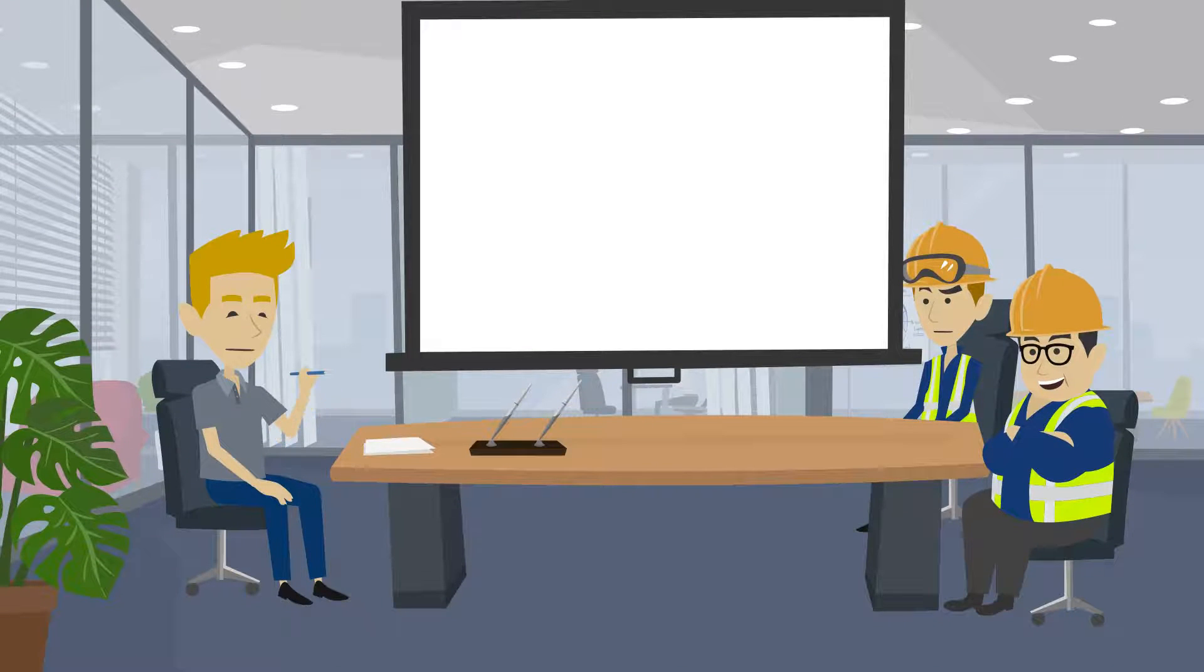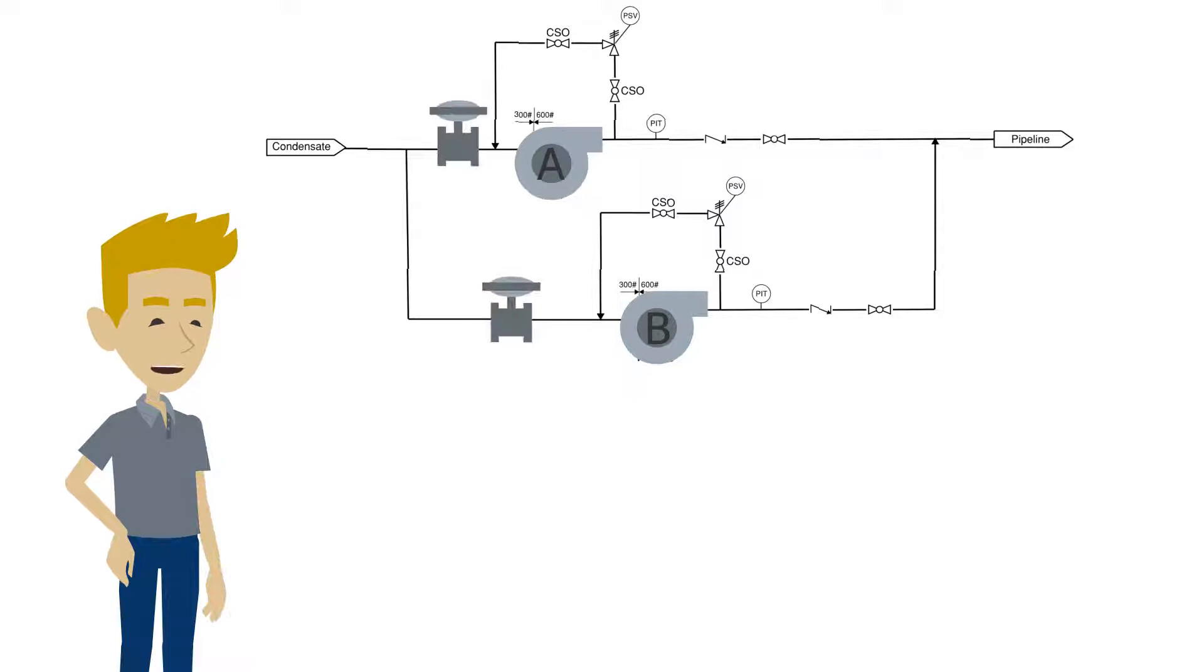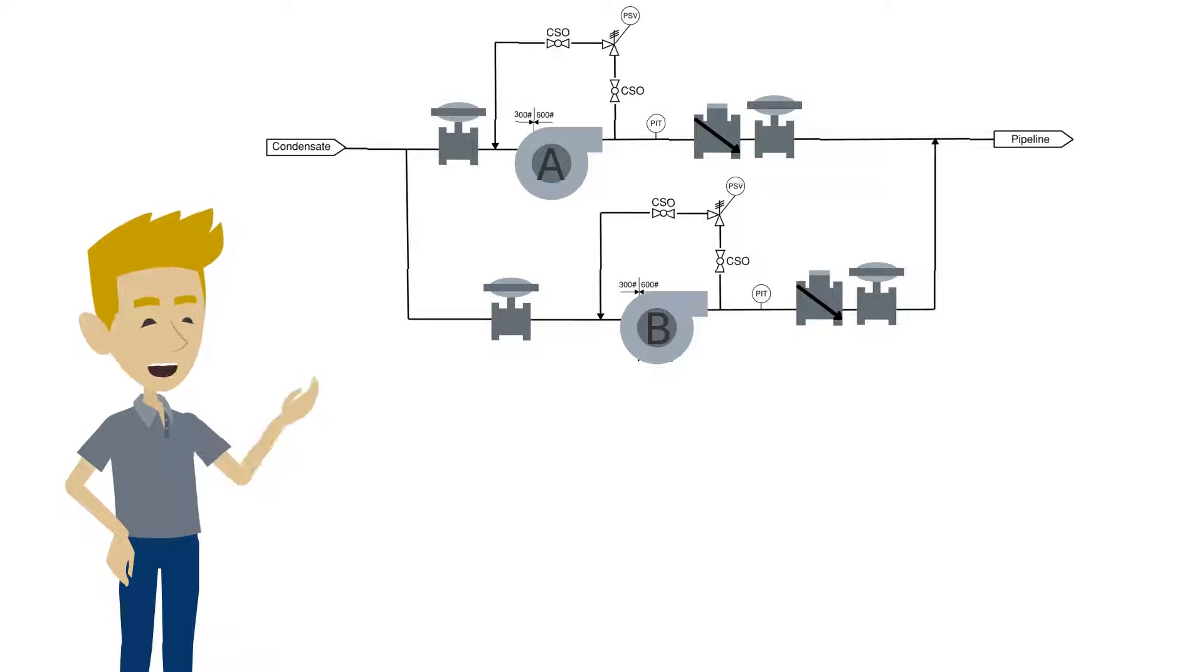Let's go over what happened. If we look at the P&ID, we can see there are two pumps in parallel, each with isolation valves upstream and downstream. There are also check valves downstream of each of the pumps. The pumps have a common discharge line and a common inlet line.